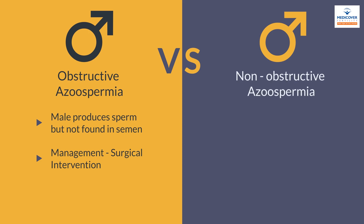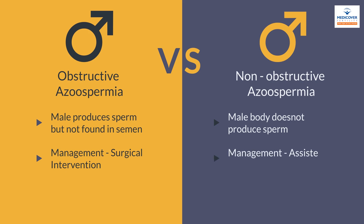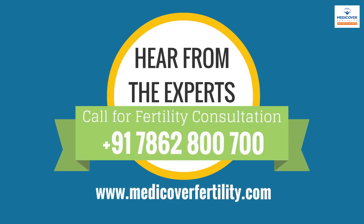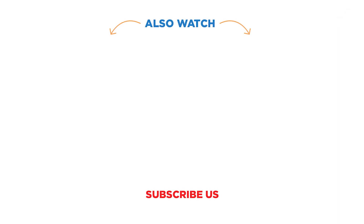In non-obstructive azoospermia, the male body does not produce sperm. This condition requires assisted reproductive techniques to conceive a baby. If you have any queries related to azoospermia, you can call us on 7862 800 700 or post in the comment box. Thanks for watching this video.